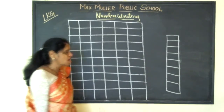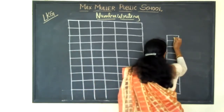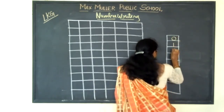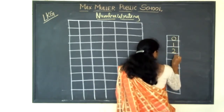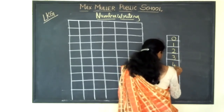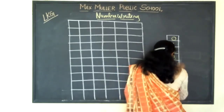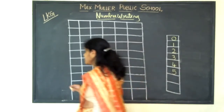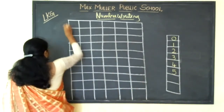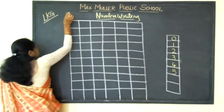So in the previous class, we will revise once again. What did you learn? Zero, one, two, three, four. So today you are going to learn five. Five. So what you are going to draw for five? Five circles.